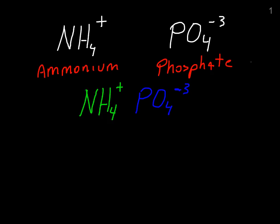So what I'm going to do is I'm going to take the positive charge from the cation and move it down into a subscript position off the anion. And then also take the charge of the anion and move it to a subscript position next to the cation.